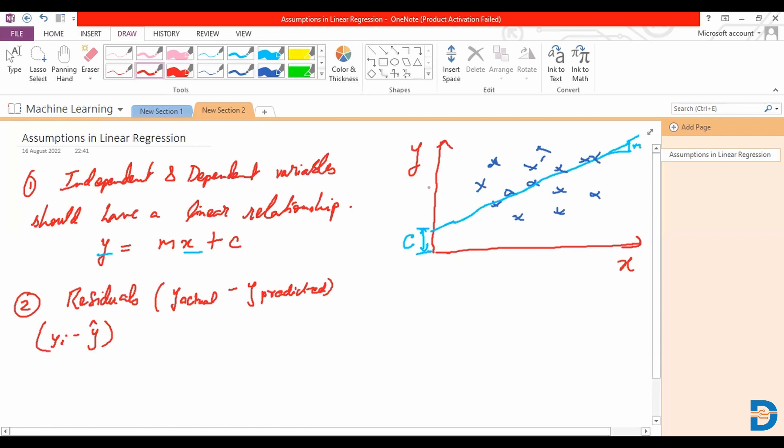Okay, residuals for each and every data point has a corresponding approximation onto this linear line which becomes the predicted value. So this has an actual y value and it has a corresponding predicted value and this difference between y actual and y predicted becomes the residual. All these residuals should follow a normal distribution.